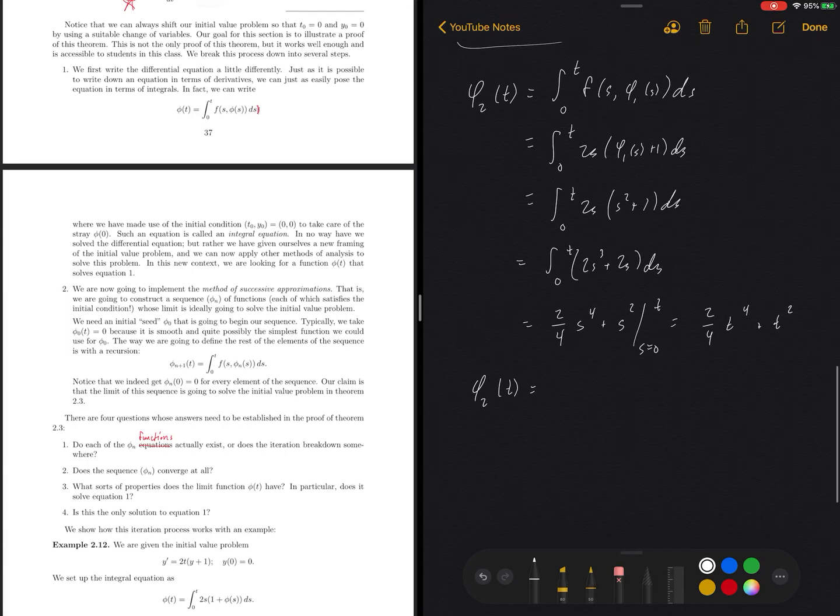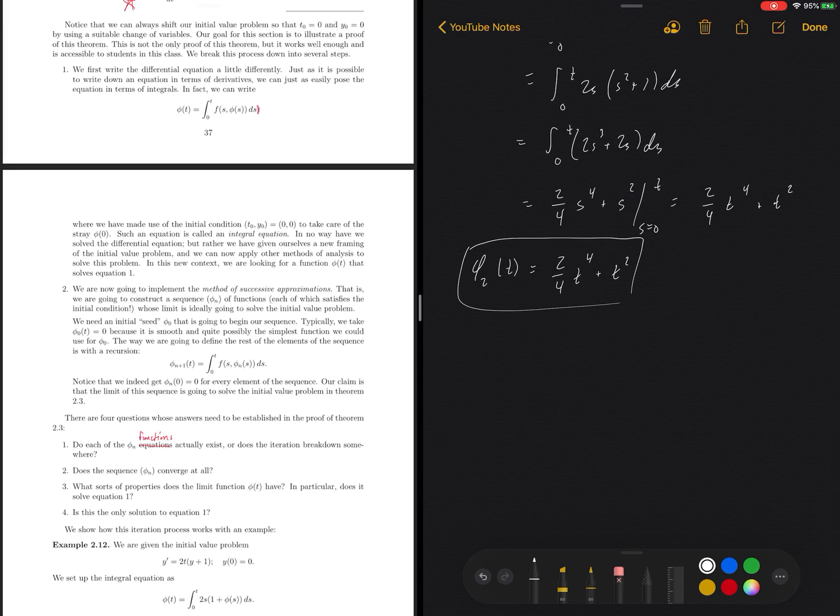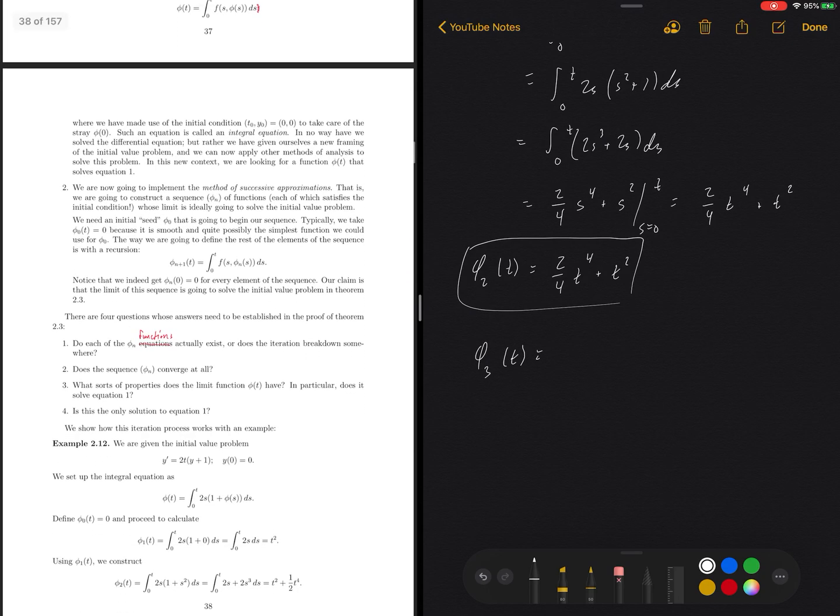So phi two is going to be a quartic polynomial. I will rewrite this guy: 2 fourths t to the fourth plus t squared. Here's my next iteration. So the question now is, how many times do I have to iterate this guy before I start to get anywhere, before I start homing in on some solution? Well, usually what happens at this point if you're trying to do this by hand is that you're trying to find some pattern in the phis. And we can keep going at this for a while before we start to see any discernible pattern, but I'll do one more iteration just for the heck of it.